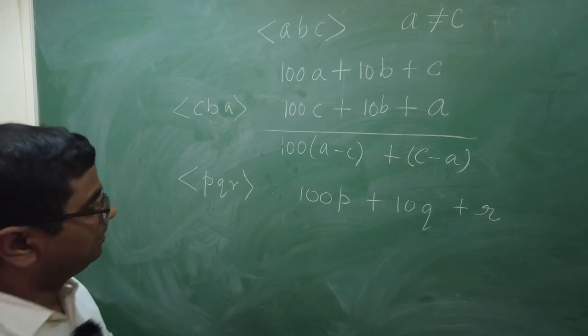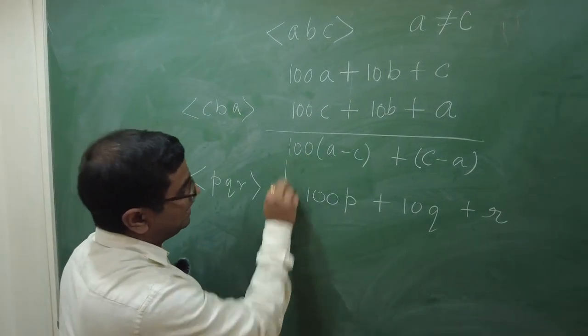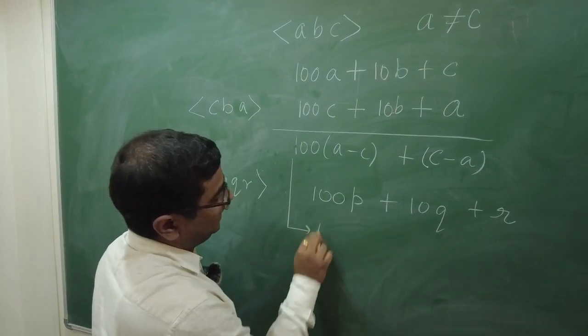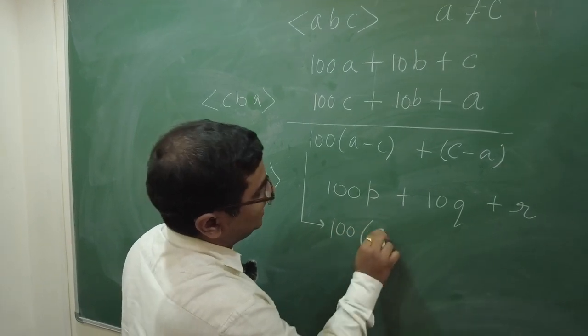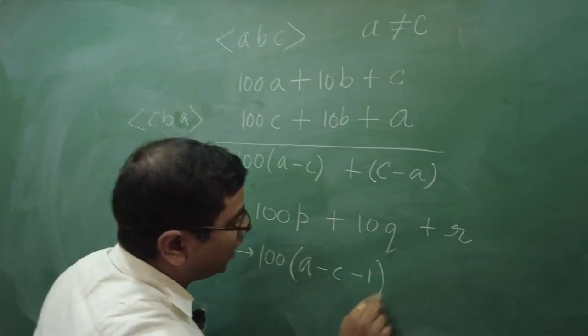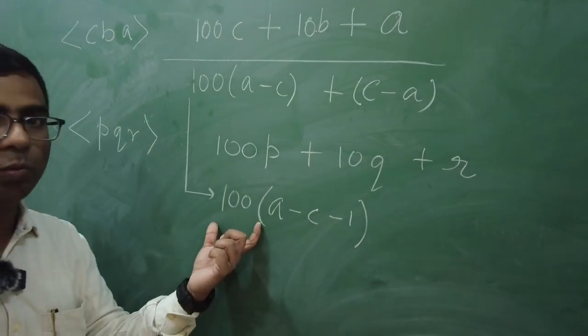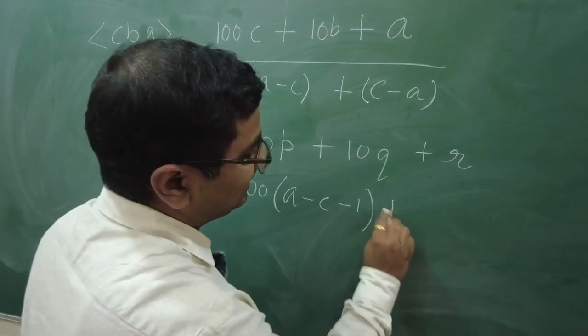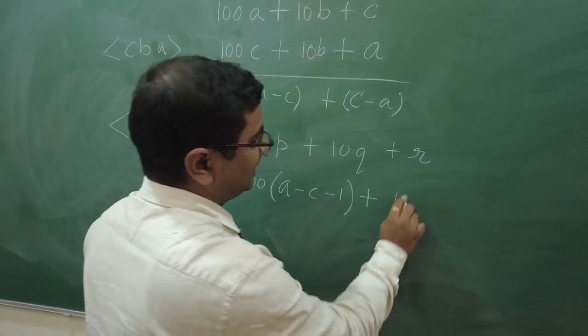So, what I am doing is, from here, let us say, we write this expression as 100 times A minus C minus 1. Why did I do that? Because I borrowed 100 from it. And, this, I can write it as plus 100.